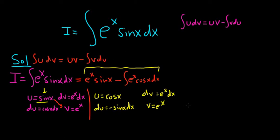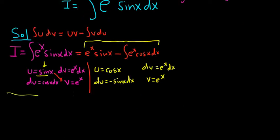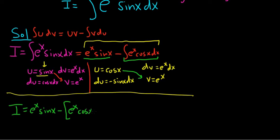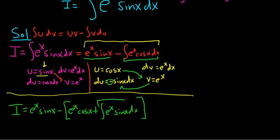Coming back to rewrite: i equals e to the x sine x, minus, and applying parts on the second integral, that's uv equals e to the x cosine x, minus the integral of v du. But there's already a minus sign, so it becomes plus e to the x sine x. And this is beautiful — that last term is just our original i.